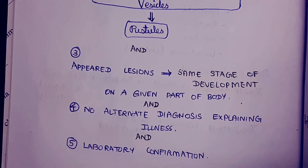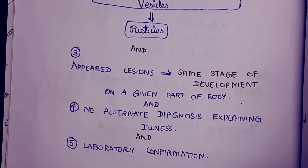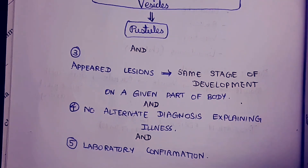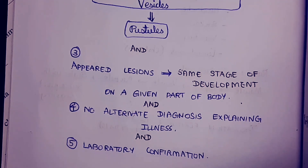Since May 1980, smallpox has been eradicated worldwide. The virus is stored in American and Russian research institutes. If any pandemic involving smallpox were to occur, millions of vaccines and sample viruses stored in these research centers are available to prevent such a pandemic attack.